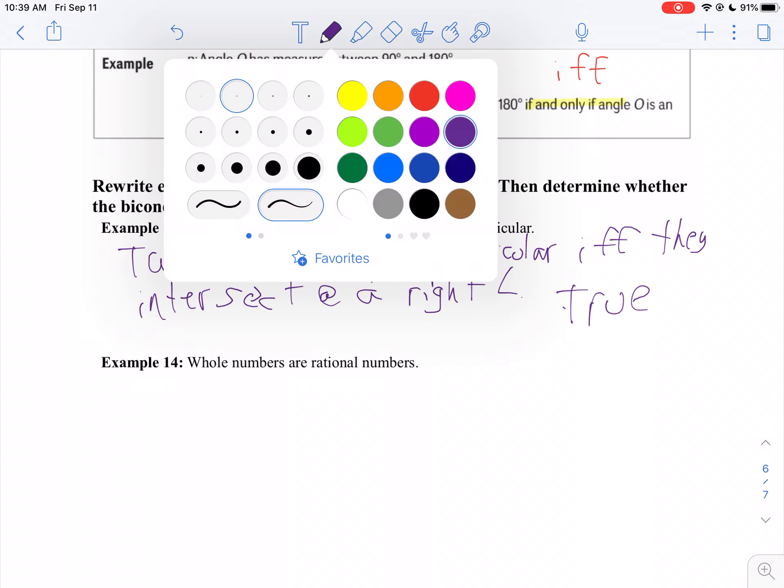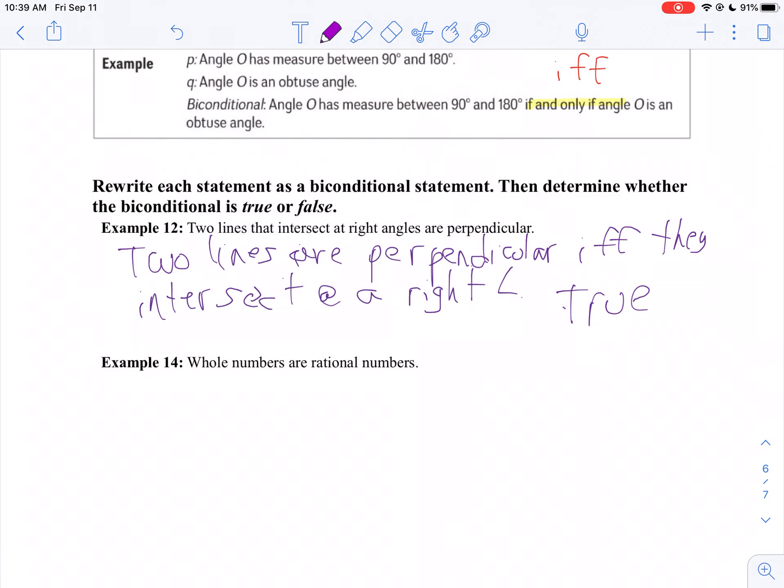Let's take a look at the next one. Whole numbers are rational numbers. So we're going to say a number is a whole number if and only if it is rational. Is that statement true?